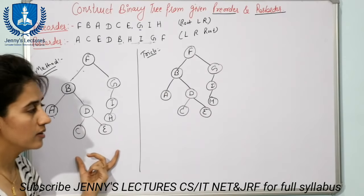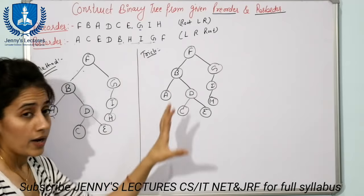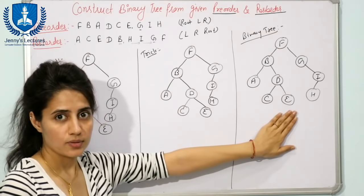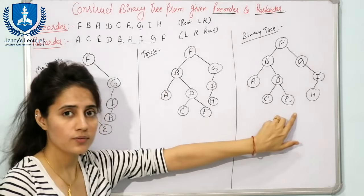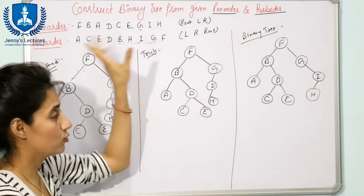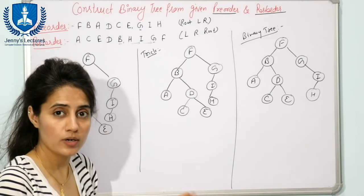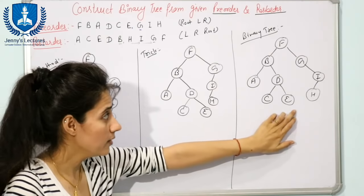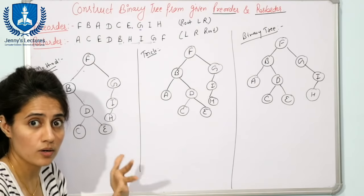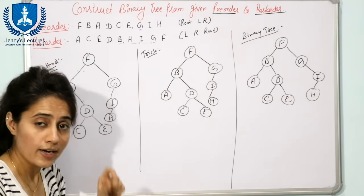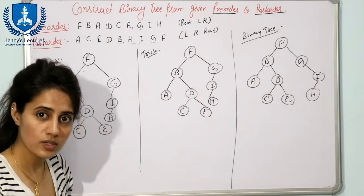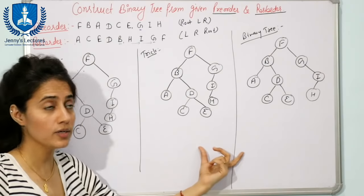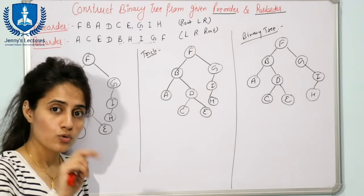You can see that both methods give the same result. But as stated earlier, we cannot uniquely construct a binary tree using only pre-order and post-order. There exists another binary tree that produces the same pre-order and post-order as this one. That is the proof: for two different binary trees, we are getting the same pre-order and post-order.